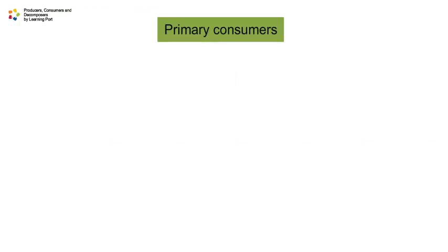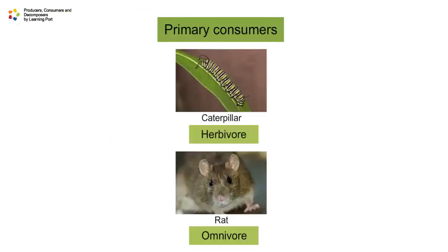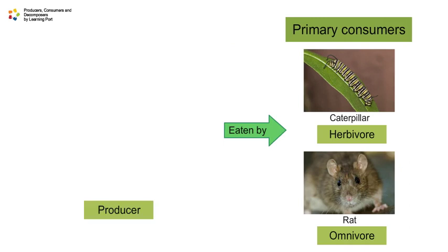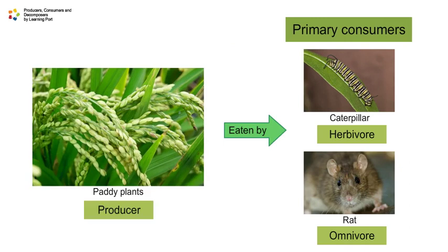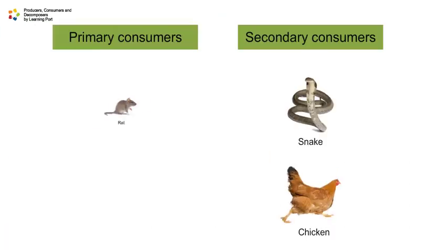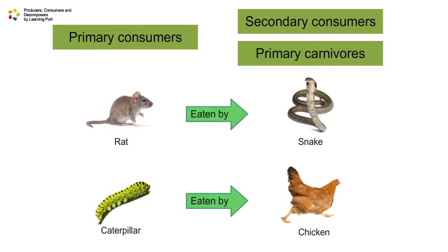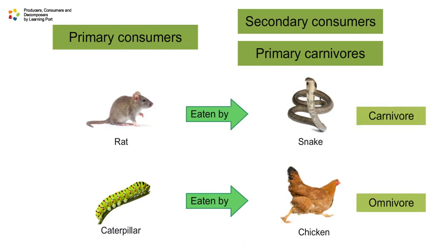Primary consumers are herbivores and omnivores that eat producers. Secondary consumers eat primary consumers, and they are also known as primary carnivores. Secondary consumers can either be a carnivore or an omnivore.